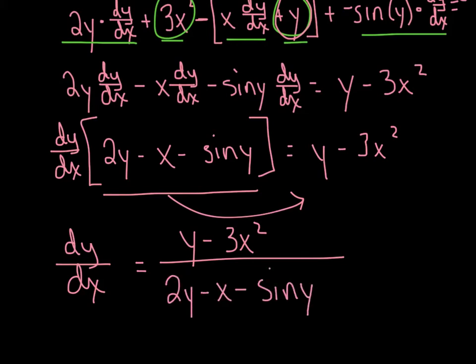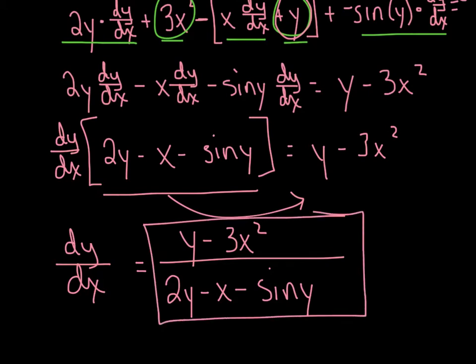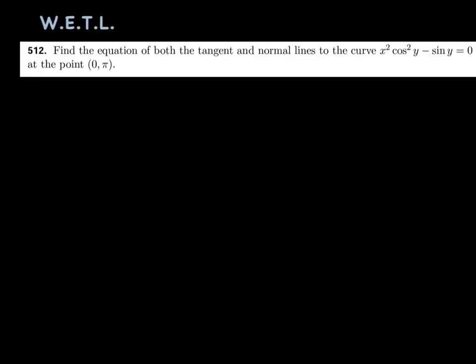For our next example, I want to practice writing the equation of a tangent line — or WETL as I commonly refer to it. We want to find both the tangent and the normal lines. Don't worry about normal yet — the normal is going to be a piece of cake. Just put all your energy into getting this tangent line. They already gave me the x and y coordinate, which is beautiful. All I need to do is derive this function implicitly and then evaluate it at (0, π), and I'll have my instantaneous slope.